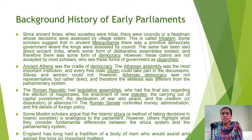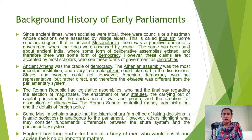This kind of democracy was different from the parliamentary system. Another stage of development of the parliamentary system can be seen in the Roman Republics, where legislative assemblies existed and had the final say regarding the election of magistrates, the enactment of new statutes, carrying out of capital punishments, the decision of war and peace, and the creation or dissolution of alliances. In this way, the Roman Senate controlled money, administration, and the details of foreign policy.